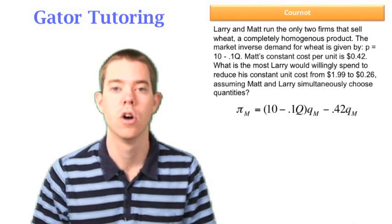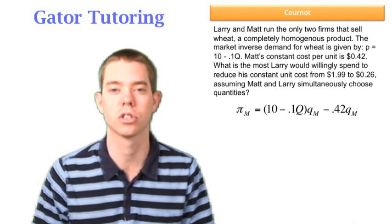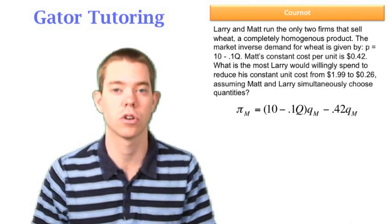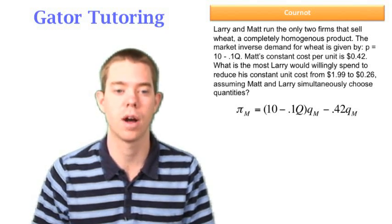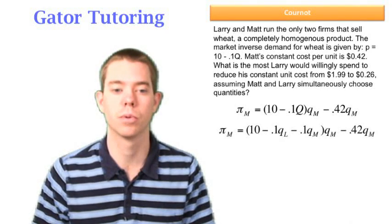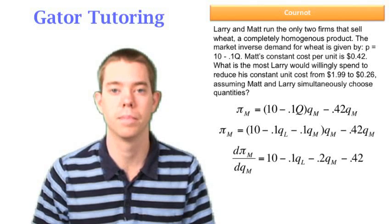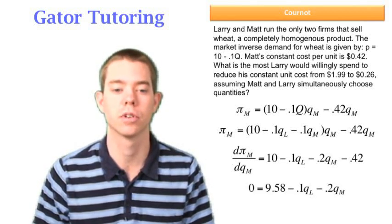So we start out, we want to find Matt's reaction function because Matt's reaction function is not going to change, his costs aren't changing. So we can start from profit M, and we take the derivative with respect to QM, and we can go ahead and set that equal to zero and solve for Matt's reaction function.